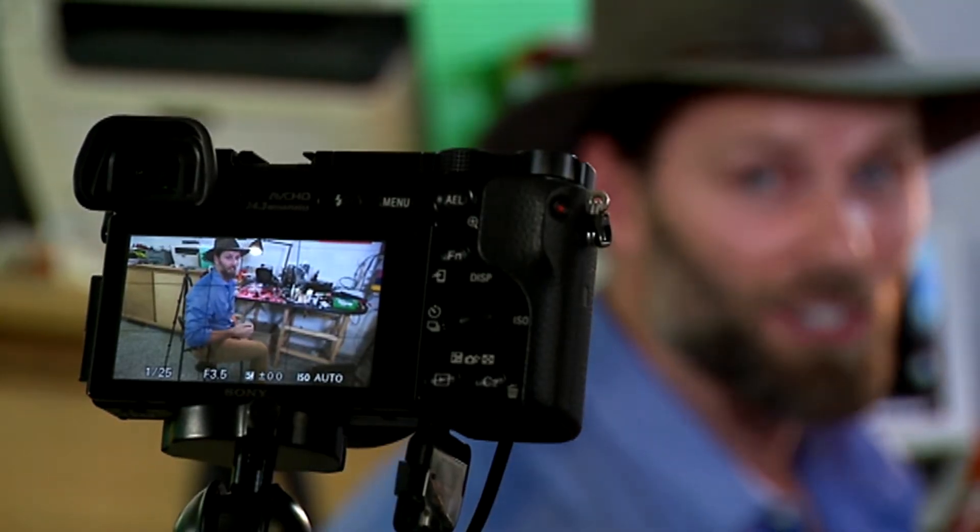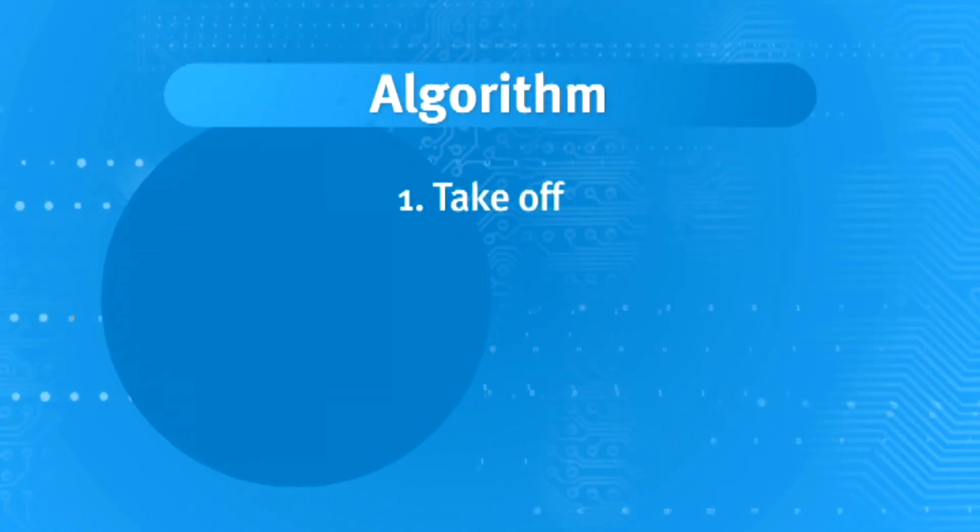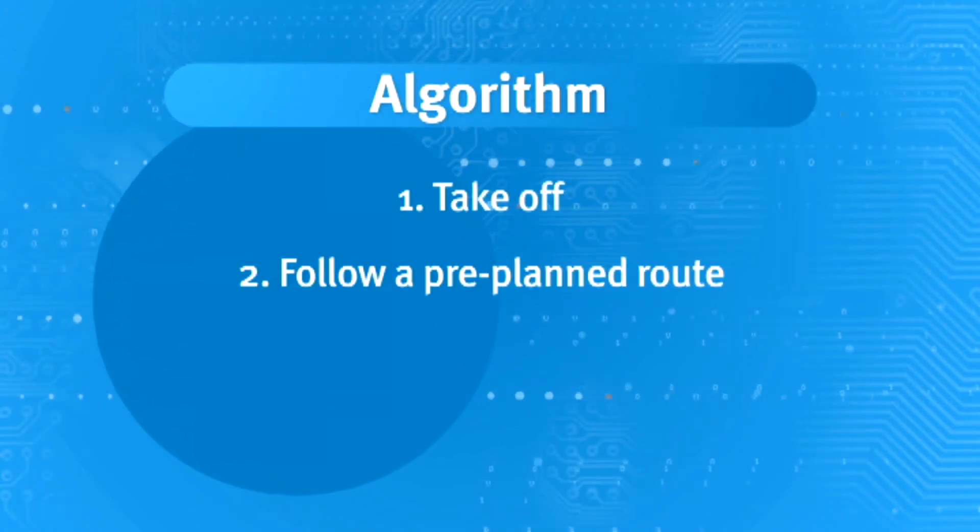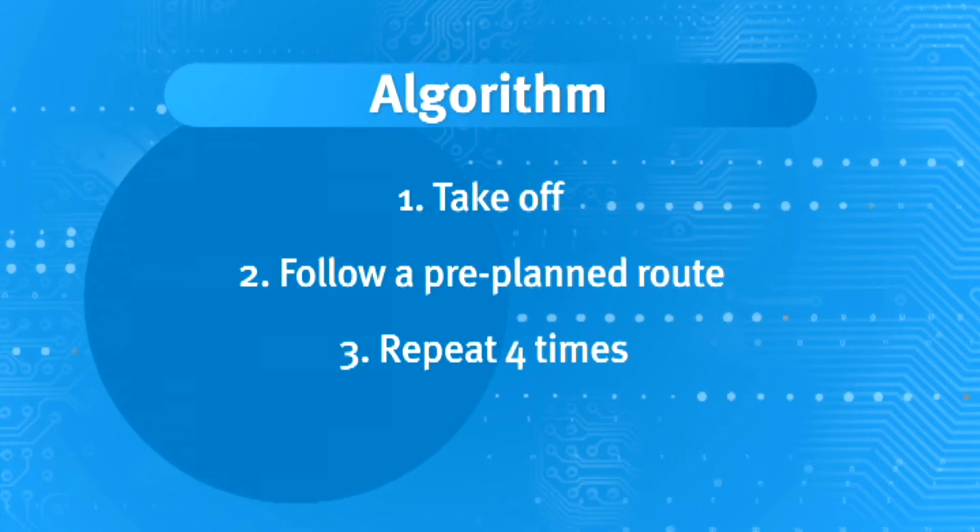By adding variations in the algorithm, we can actually incorporate a repeat. By adding this repeat in the code, we don't have to keep writing the same thing over and over again. The code on the drone will not change in the repeat — if it's asked to do 100 times of the circuit, it's going to do 100 times of the circuit. The only way you can change it is to stop it manually or it runs out of battery. Let's add repetition into our algorithm: take off, follow the pre-planned route, repeat four times, land.